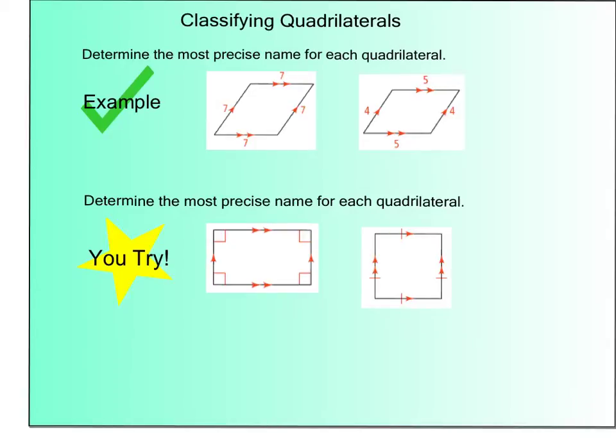So we're going to look at classifying these quadrilaterals. In order to do this, I need to remember what my properties are and then use them to determine what kind of quadrilateral I have. The directions say determine the most precise name for each quadrilateral.